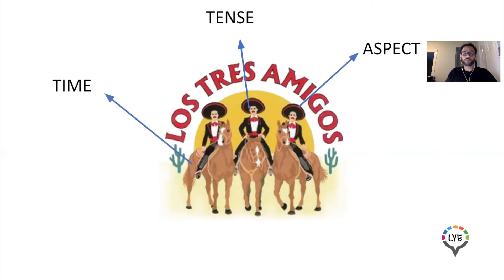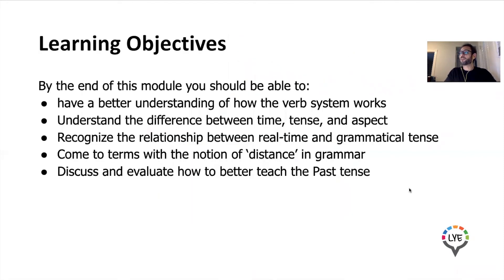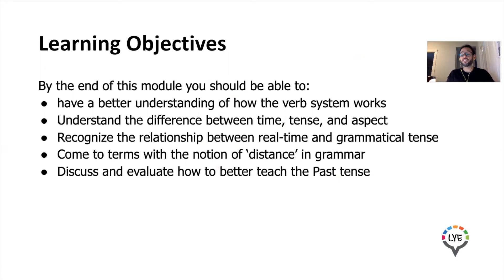We hope you enjoy this module. Some of our learning objectives include having a better understanding of how the verb system works, understanding the difference between time, tense, and aspect, and being able to recognize the relationship between real time and grammatical tense. Finally, the last two learning objectives are to come to terms with the notion of distance — which is very important when we look at the past — and to discuss and evaluate how to better teach the past tense.